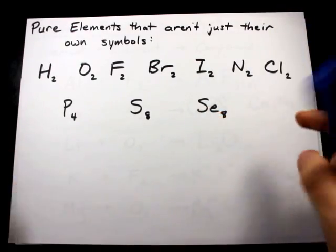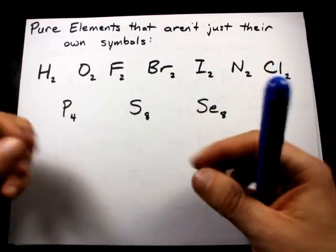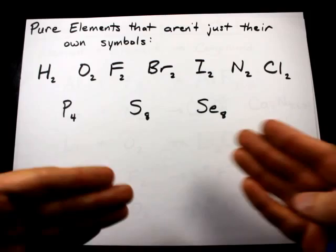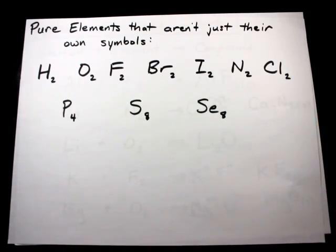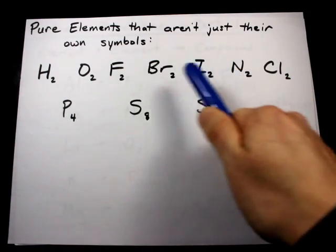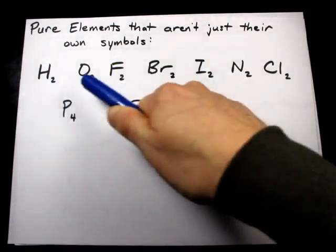It's very rare to see a Cl atom on its own in nature. Cl, in its pure form, prefers to be Cl2. Same with iodine, nitrogen, fluorine, bromine, hydrogen, oxygen.